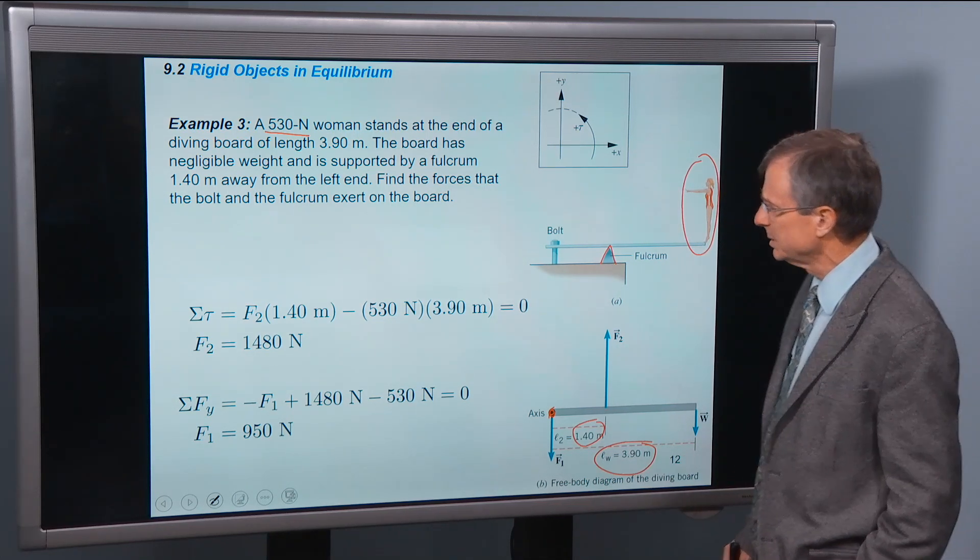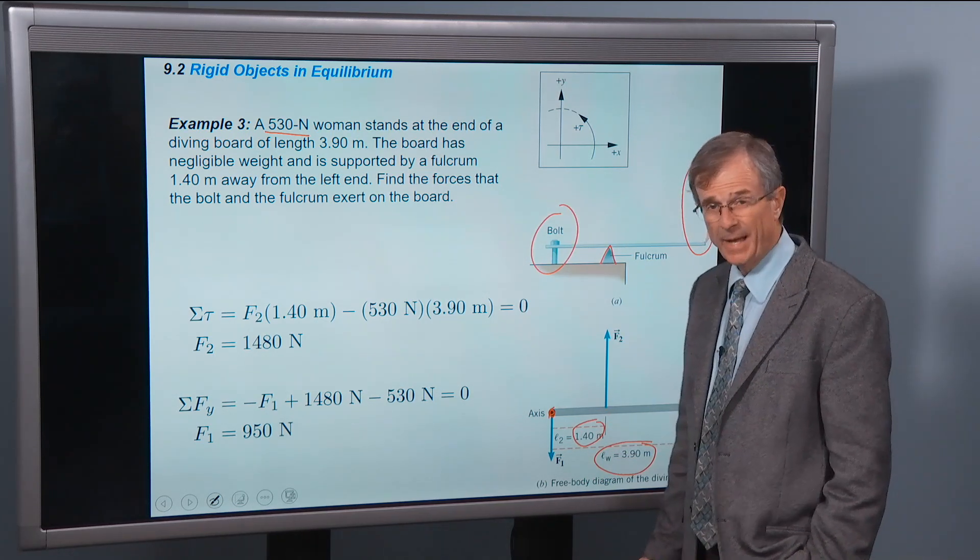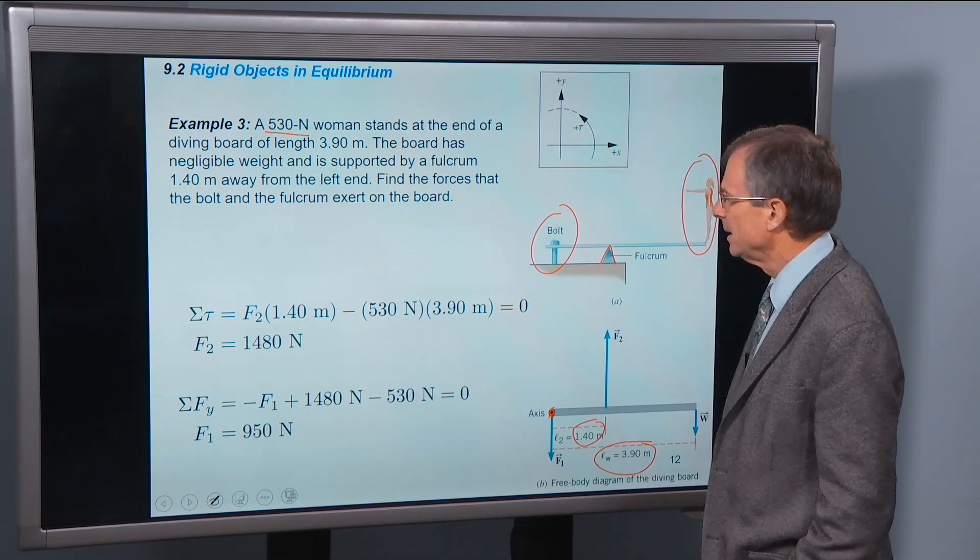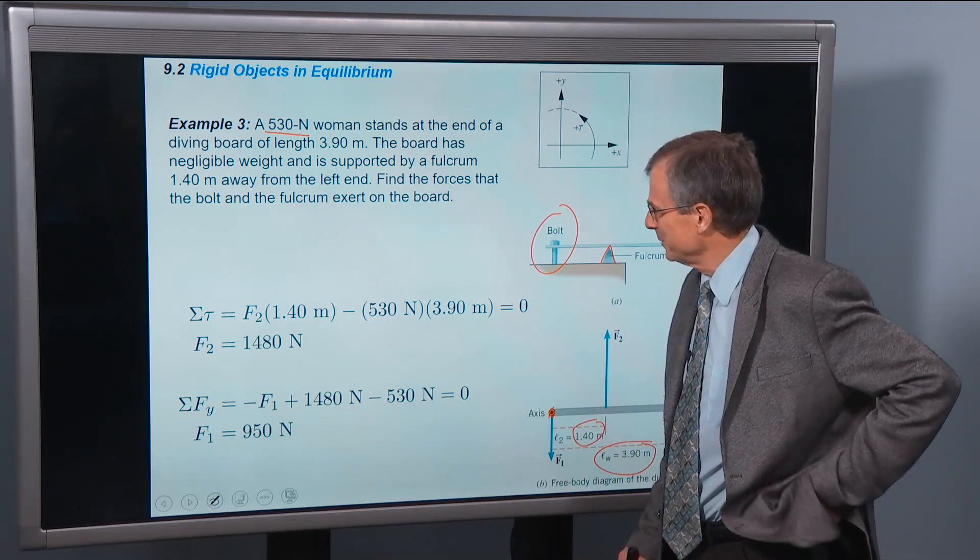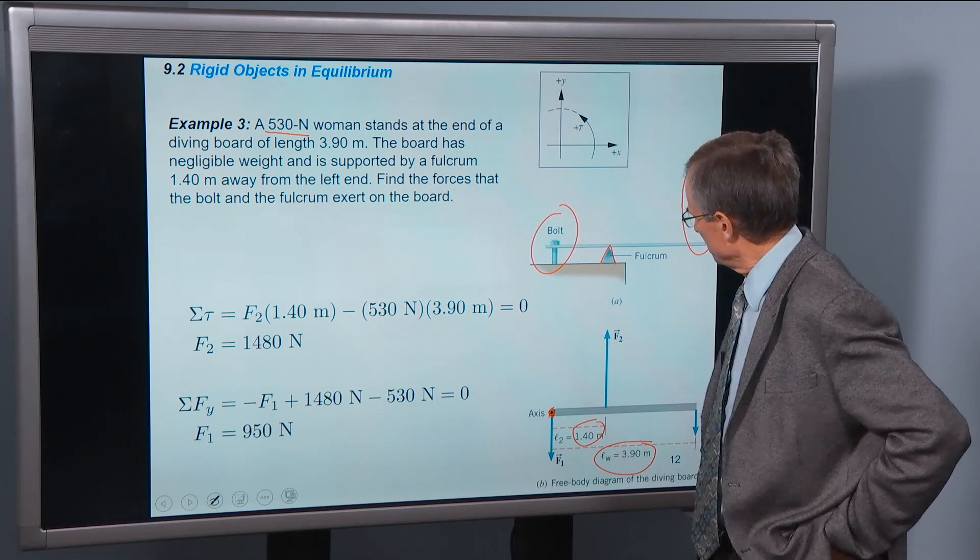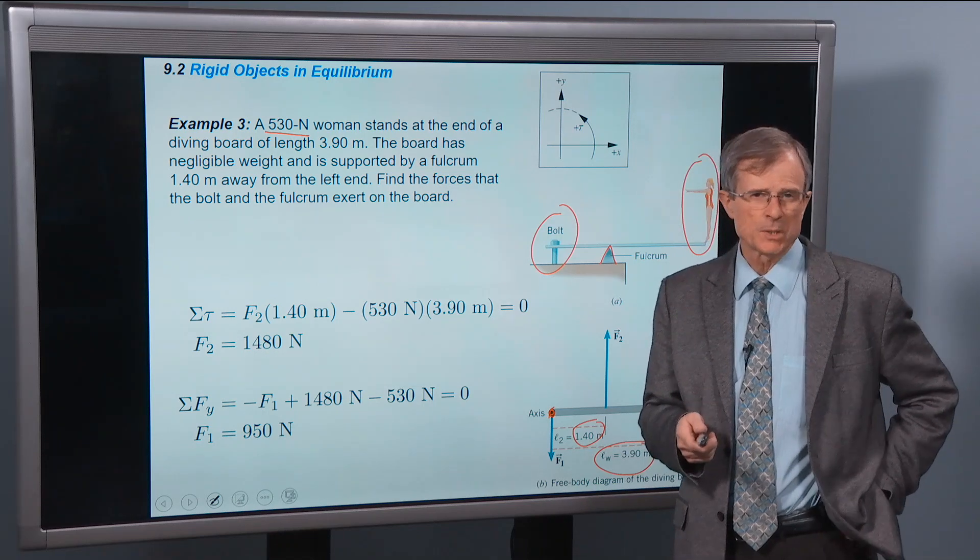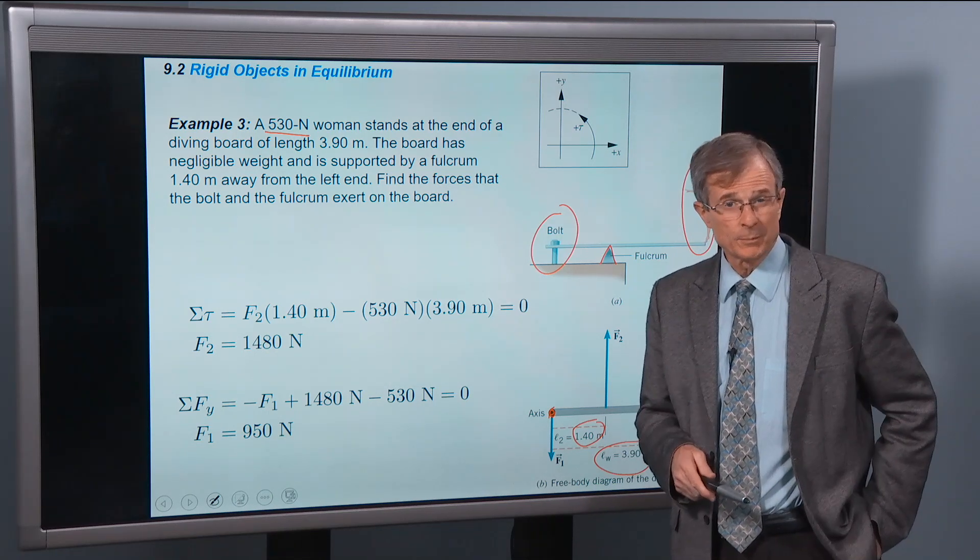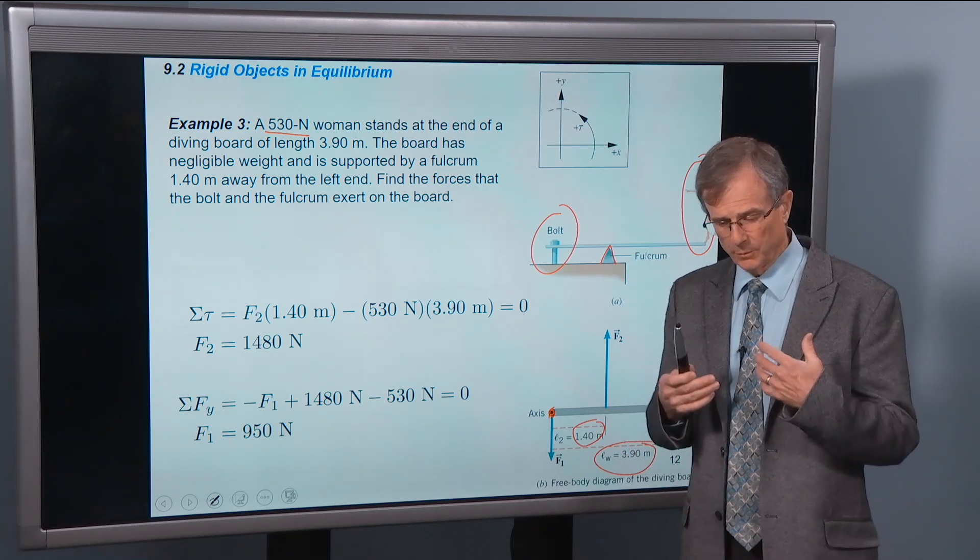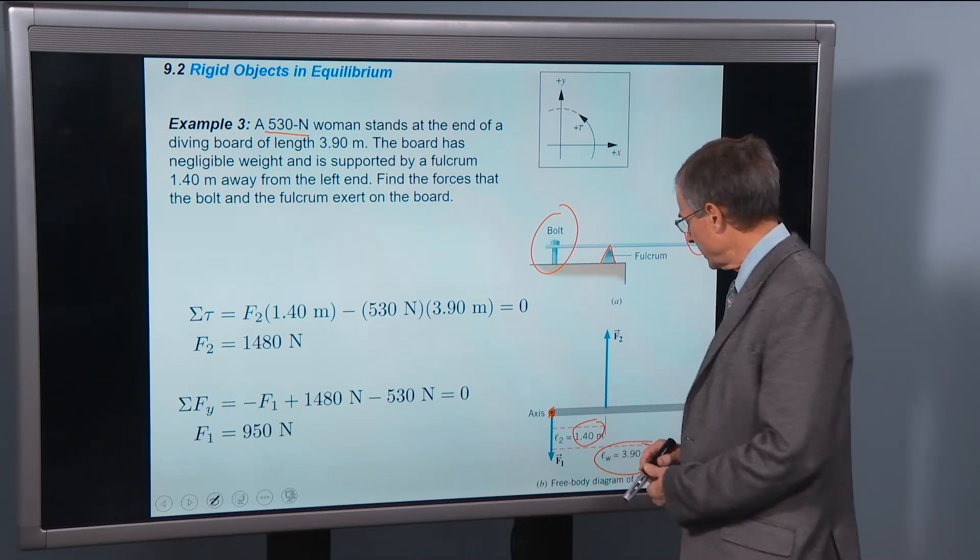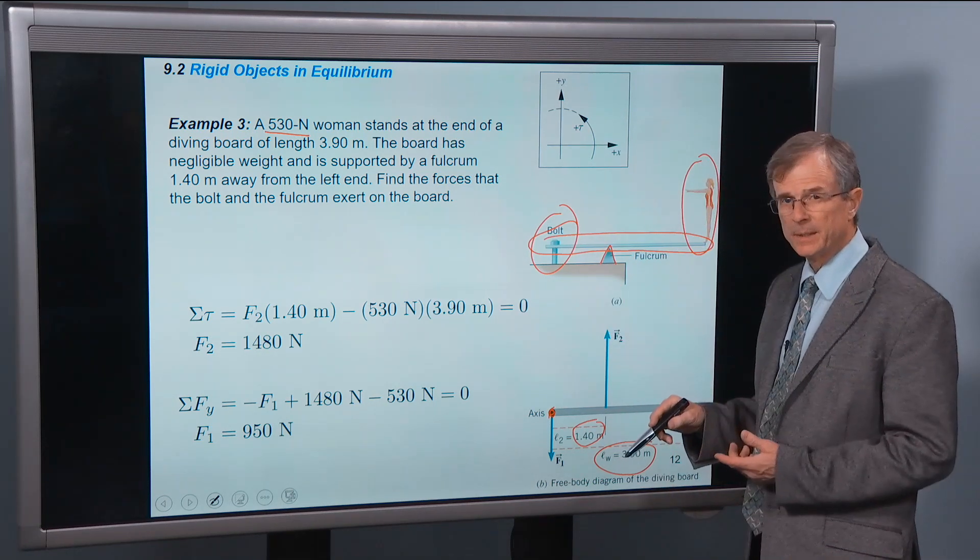Find the forces at the bolt. So the bolt is what is holding it in place at the location of the axis of rotation. We want to find the forces. This is a really cool problem. These are really fun problems. So the first thing in trying to solve a problem like this, you follow the steps that you do in solving force problems. The first thing we're going to do is identify an object that we want to look at the forces on. The object, in this case, is the diving board itself.